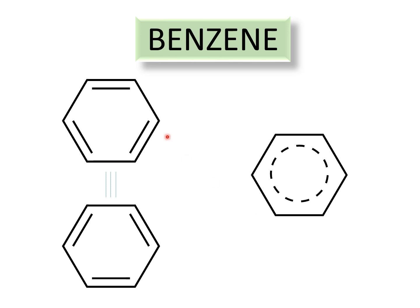To form a double bond we must have two p orbitals, so each of these carbon atoms is sp2 hybridized and each carbon has a p orbital. There are a total of six p orbitals involved in the formation of these three double bonds, and because of delocalization or resonance they overlap with each other.